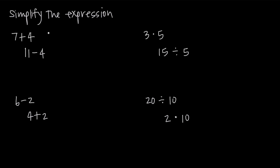We have 7 plus 4. We know that 7 plus 4 is equal to 11. The fact that addition and subtraction are inverse operations tells us that if we then start with 11 and subtract 4, we should get back to 7 — the number that we started with. And of course we can see that 11 minus 4 gives us 7.